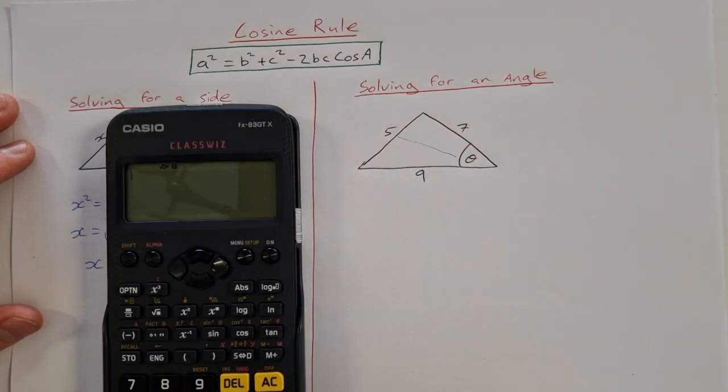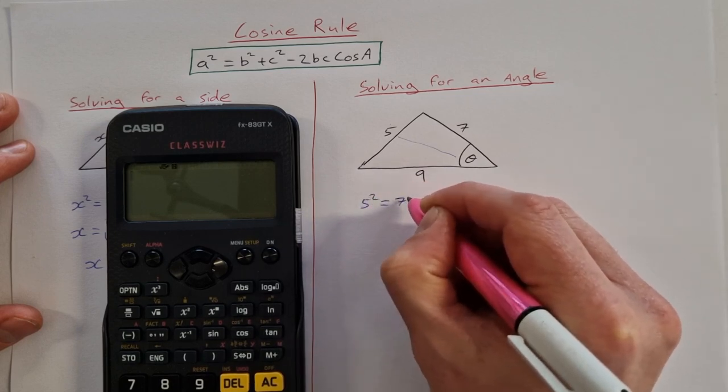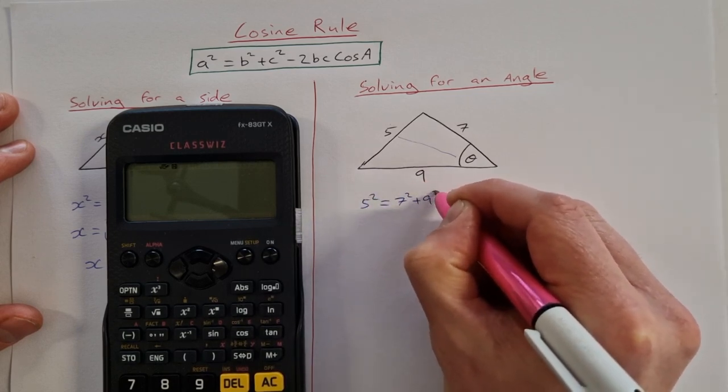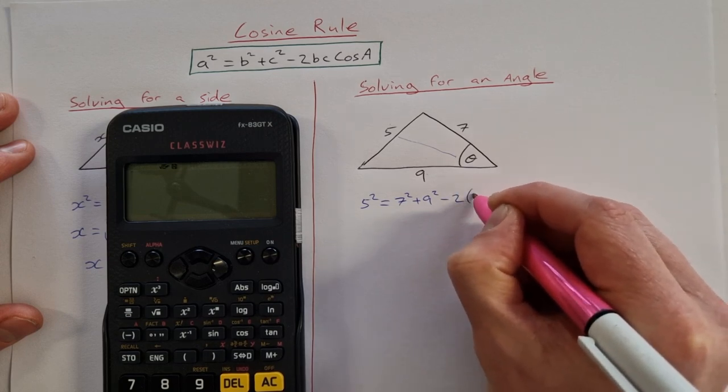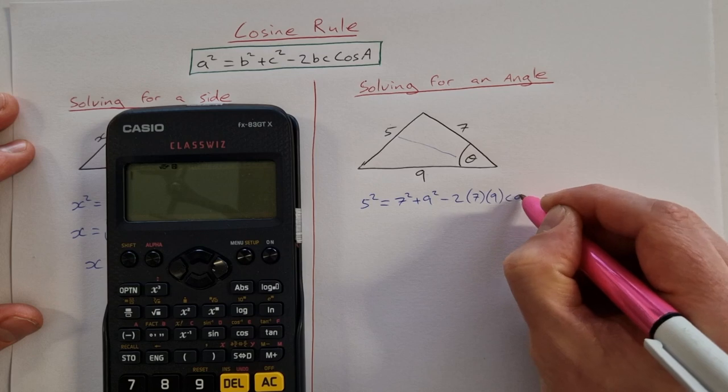The other two, doesn't matter which one is B, which one is C. So it's going to be 5 squared is equal to 7 squared plus 9 squared minus 2 times 7 times 9 cosine theta.